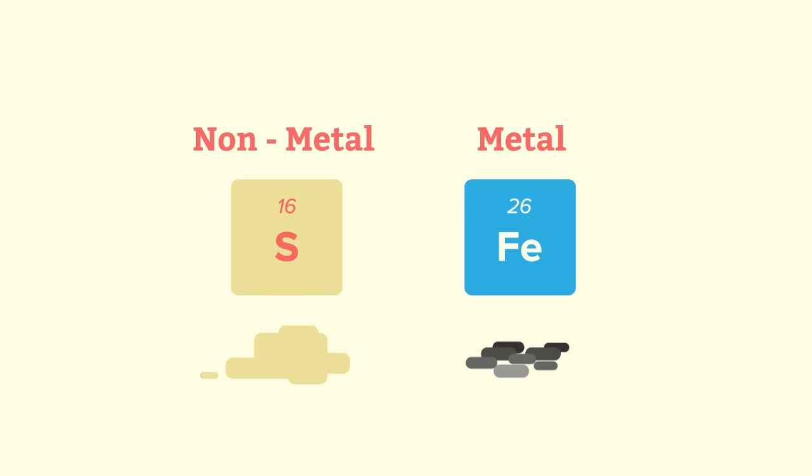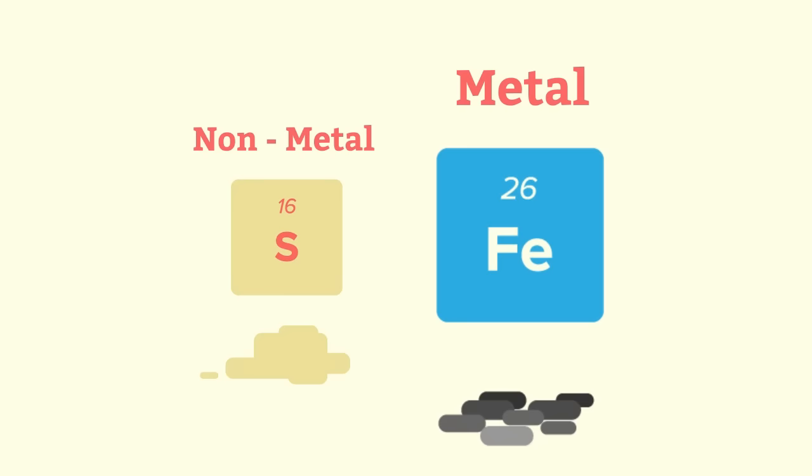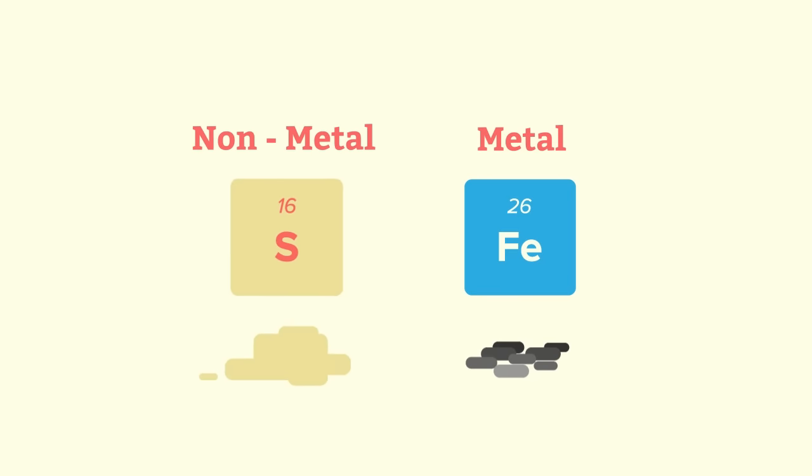So from these four tests, it can be seen that iron and sulphur are two completely different elements and behave differently in the four tests. Iron is a metal element, sulphur is a non-metal element.